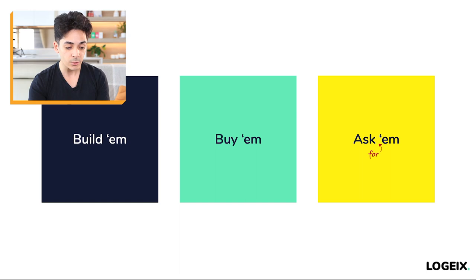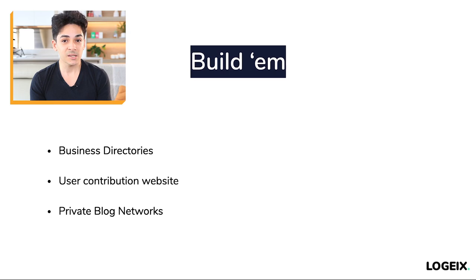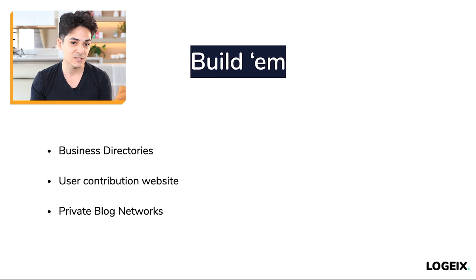Starting off with building them — how can you build backlinks? You can sign up to business directories and register your business there. This is called citations, usually structured citations in the SEO world. You go to Yellow Pages, Yelp, and other business directories including niche-specific and local ones, and register your business. Most of them will allow you to insert a link to your website while creating that directory listing.